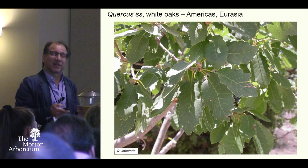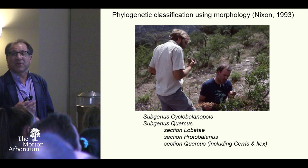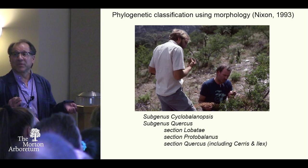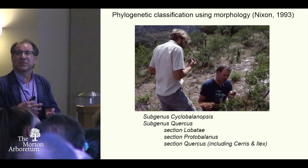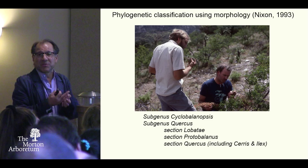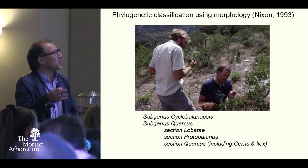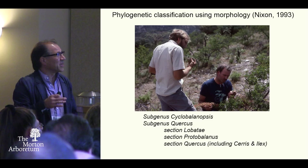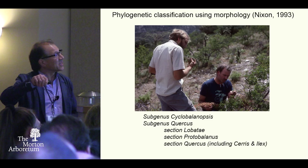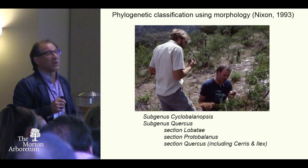From the early traditional monographers, we moved into the analytical phase of thinking about oaks. Kevin Nixon is really the preeminent expert, and he put together a classification based on principles of phylogeny — having criteria to evaluate characters and build an evolutionary tree. He chose to follow Camus more or less: Cyclobalanopsis, subgenus Quercus, and then the sections of Quercus: Lobatae, Protobalanus, and Quercus. He also included the Cerris and Ilex oaks — those are the Eurasian groups that some of you know pretty well.